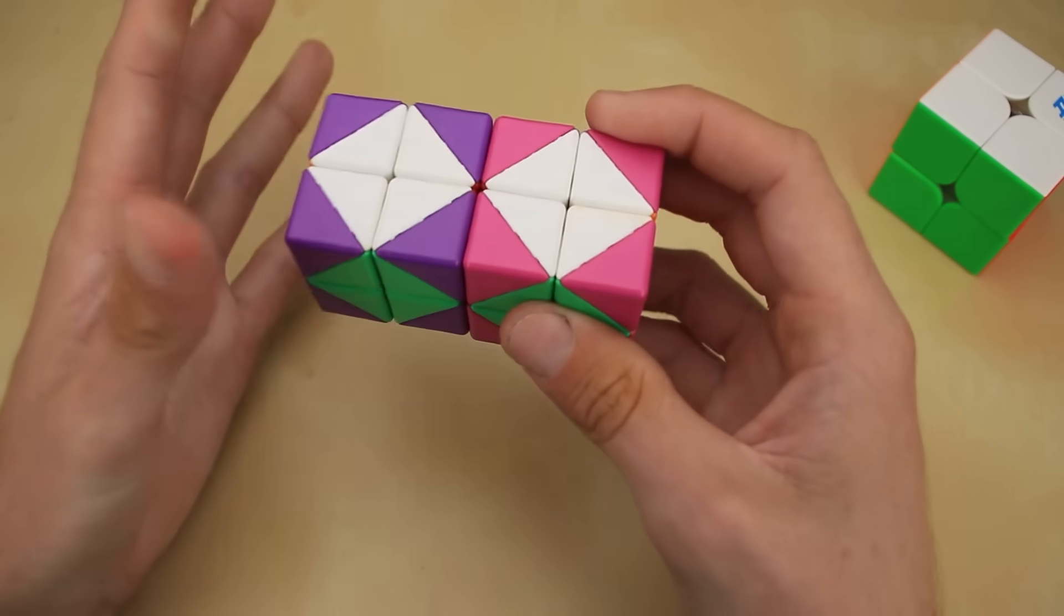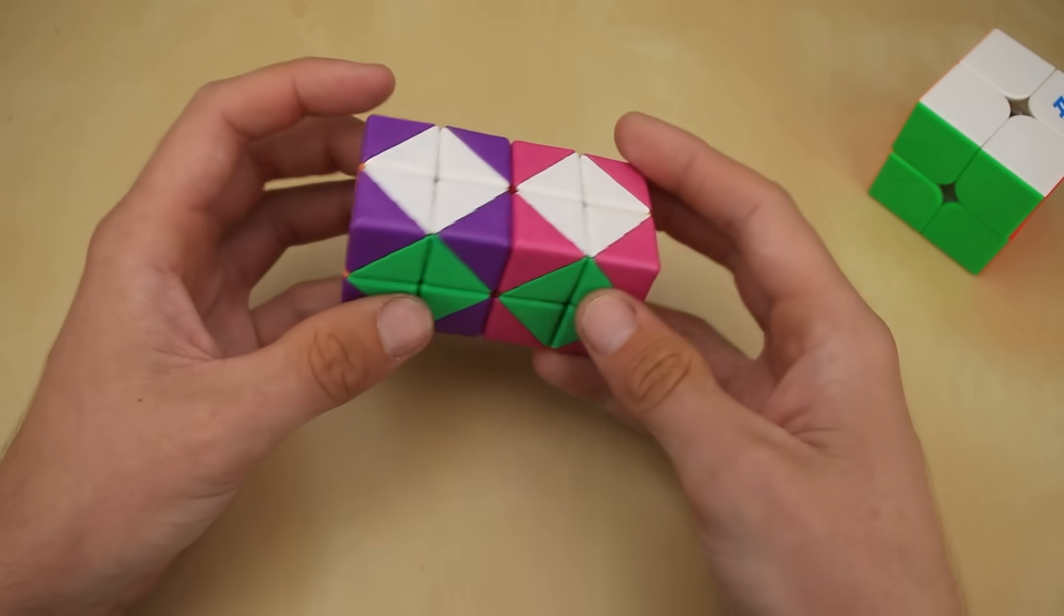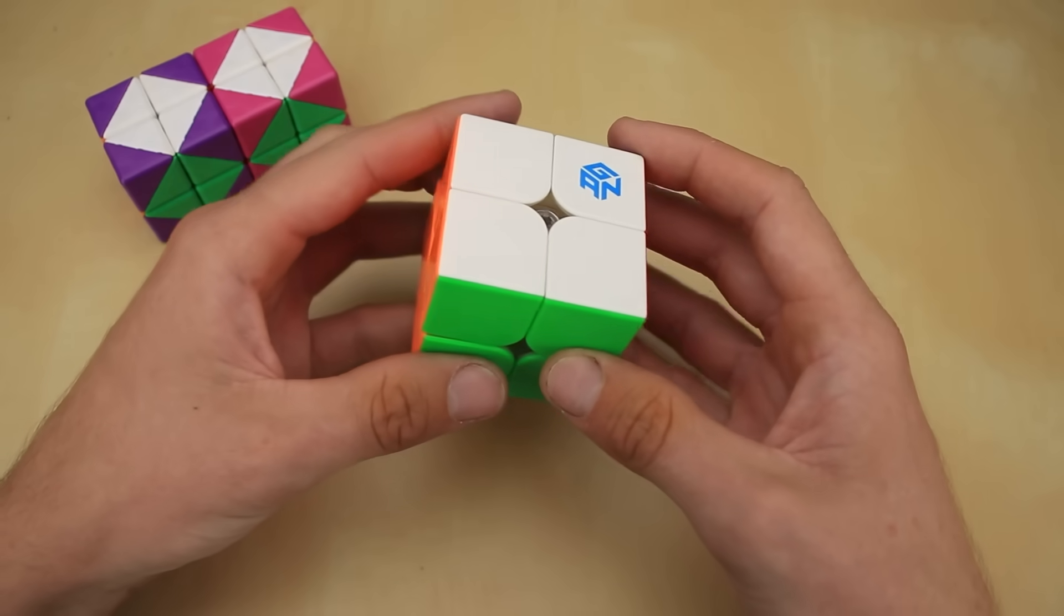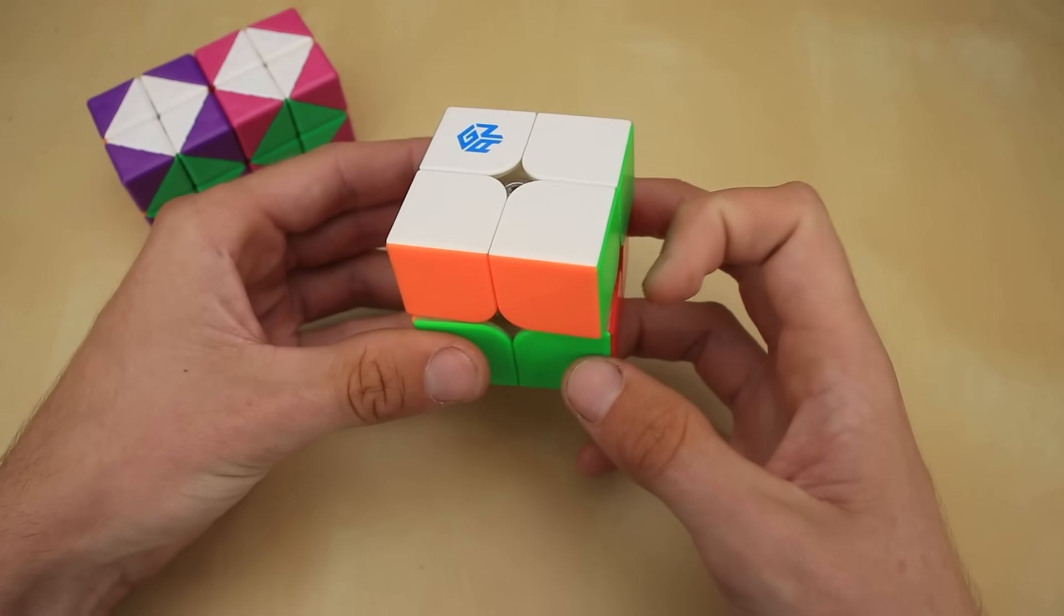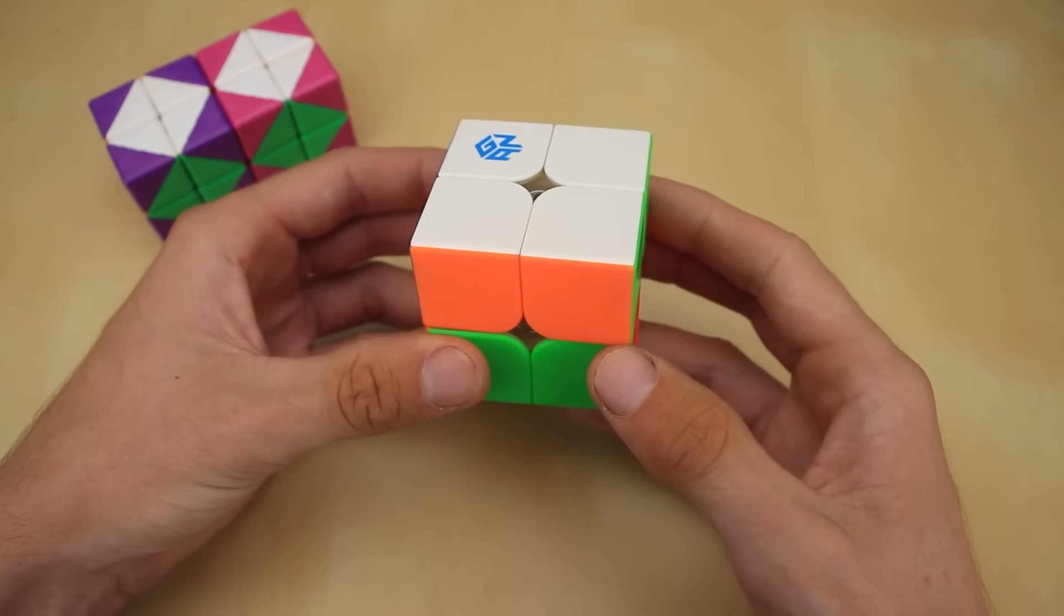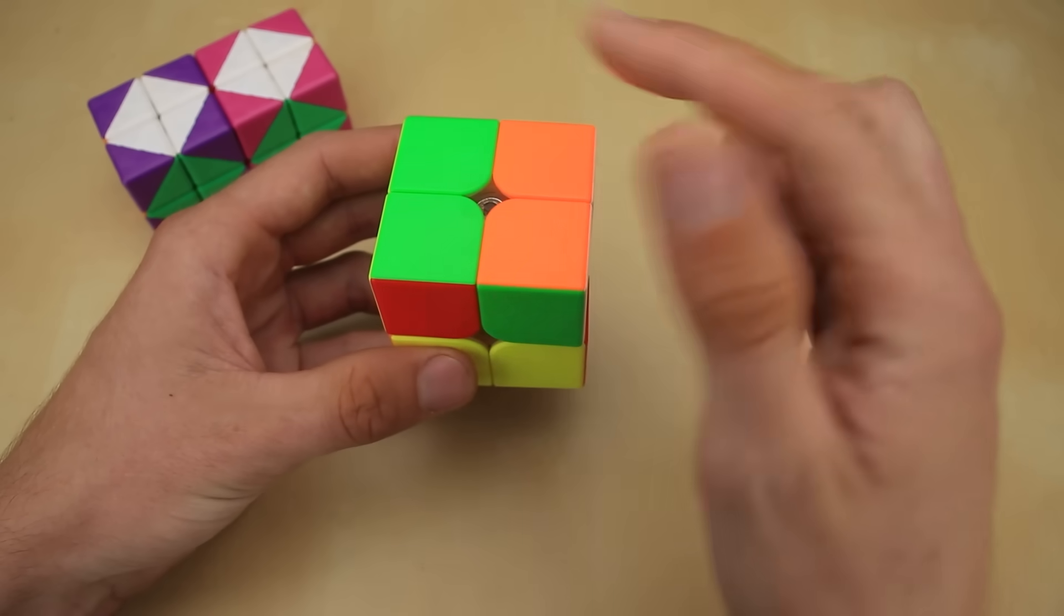And the way to do that, hear me out, is we need to four-dimensionally reorient this cube, kind of swap around where the axes are. Think about it like this. Let's say you have a normal two by two by two, but you're only allowed to do U moves like this. What would you do if you want to mix up the puzzle anymore? That's right, you would reorient it so that now your U moves are affecting a different set of colors.